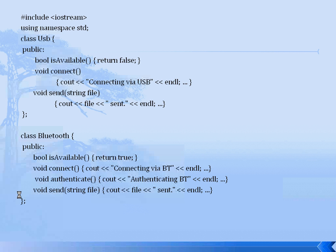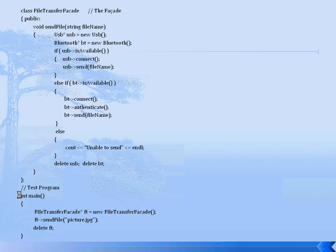Class USB has member functions: IsAvailable, Connect, and Send. Similarly, class Bluetooth has member functions: IsAvailable, Connect, Authenticate, and Send. Now we introduce the Facade class called FileTransfer. It implements a function called SendFile. This is what is going to be referred to by all the clients. The implementation of the Facade knows which USB interface to use and how to check whether it is open, how to send the file, etc. It delegates the responsibility to the subclasses. In the test program you can see how we invoke SendFile.